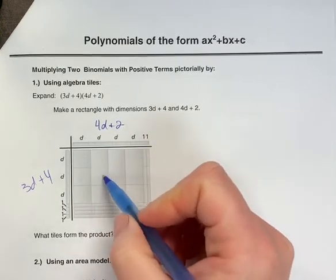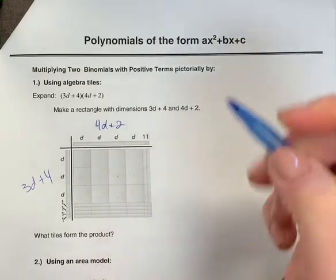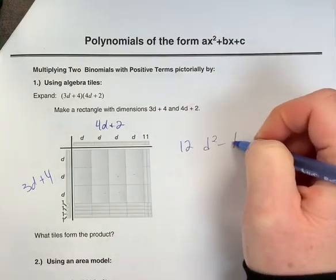So we have 1, 2, 3, 4, 5, 6, 7, 8, 9, 10, 11, 12 of the d squared tiles.